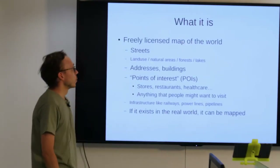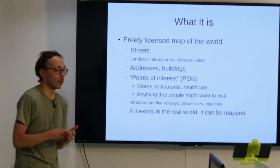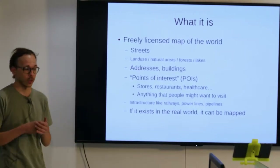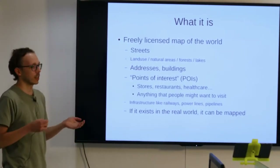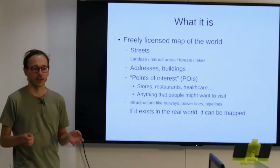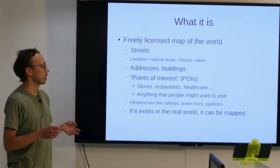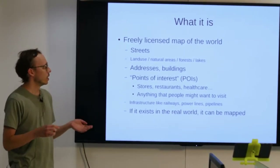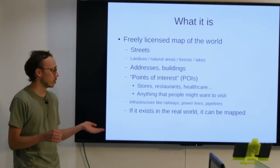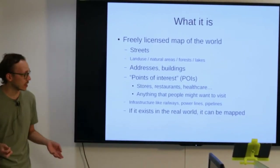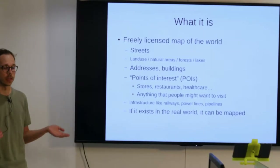So to get into what it is: OpenStreetMap is a freely licensed map of the world that is on the internet. It started off as a street map — how to get places in cars — and has since expanded into basically anything that exists in the real world that can be mapped.